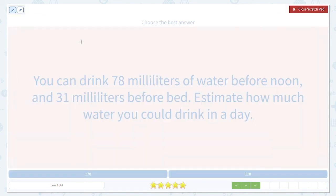So we need to find 78 plus 31. And we need to estimate it. Eight is more than five. So 78 rounds up to 80.